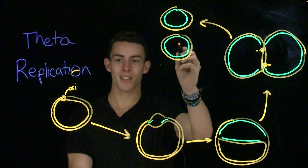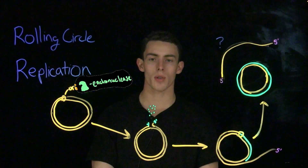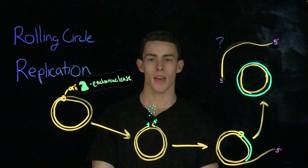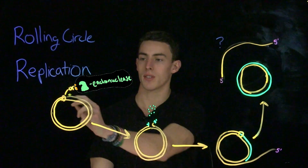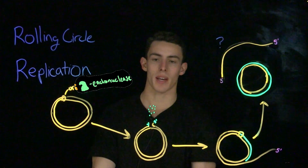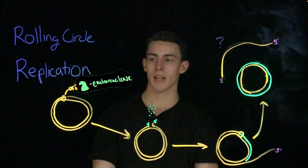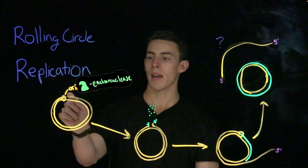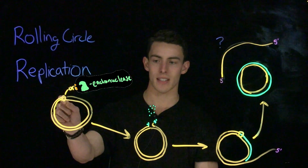Let's now take a look at rolling circle DNA replication. Rolling circle replication is not too dissimilar from theta replication in that they both involve a circular molecule of DNA with a single origin of replication. However, with rolling circle DNA replication, we have an endonuclease which will come and make a single-stranded cut in the DNA.